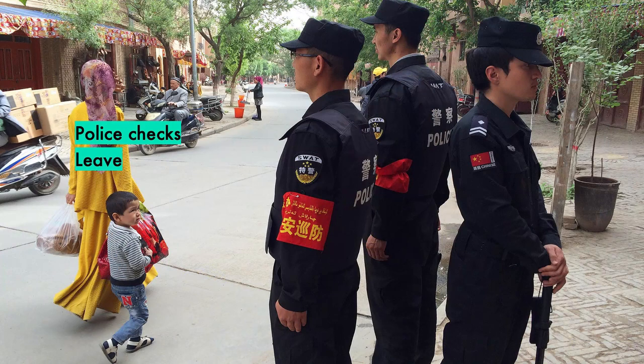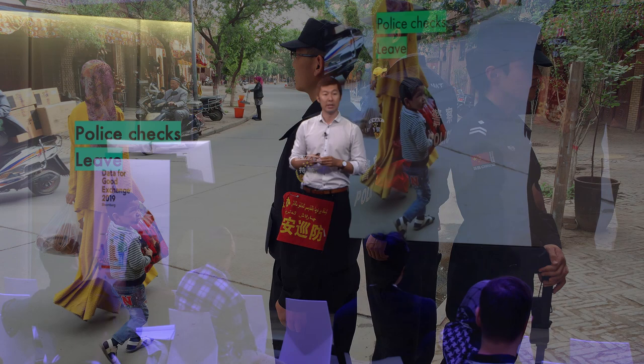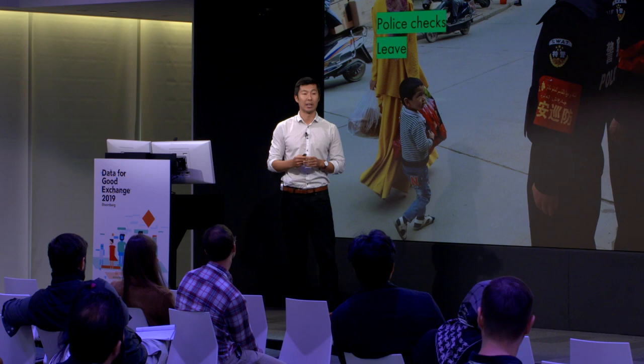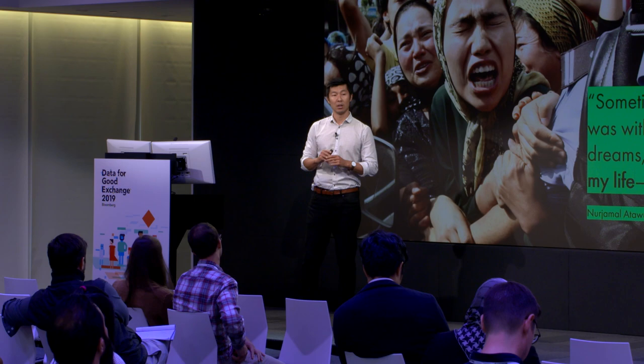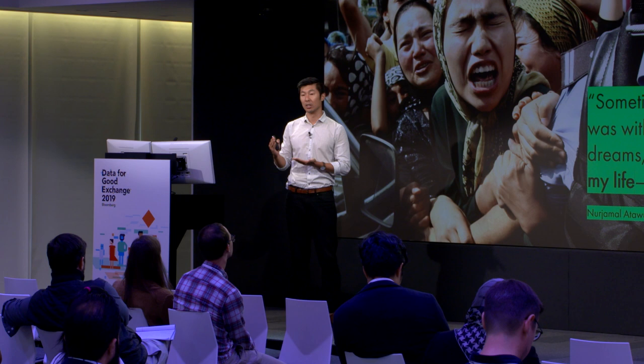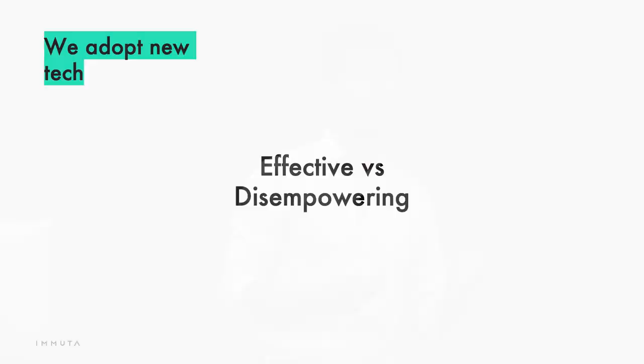The police checks became so frequent that they planned to move. Neu Zhamal would leave first while her husband and children waited for the children's visas. But as soon as she left, her husband was arrested, and she hadn't been able to talk to her children for the last two years. All of her WeChat friends and family began to block her. What we must remember when we adopt new technologies like artificial intelligence and machine learning is that there is a balance between the effectiveness of those technologies and how they might disempower the most vulnerable amongst us.